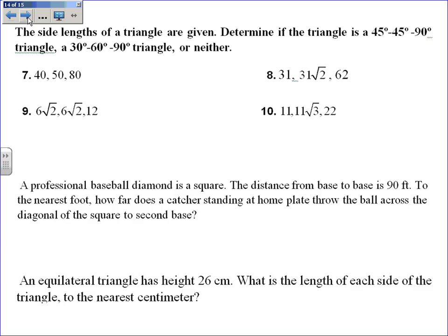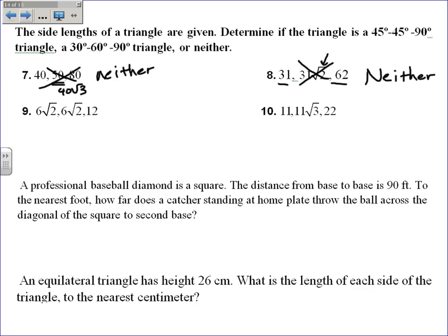One last type of question: side lengths of a triangle are given — determine if it's a 45-45-90 triangle, a 30-60-90 triangle, or neither. This one doesn't have any doubling or pairs, and it doesn't look like root 3 fits, so this must be neither. Number 8: although there's a double here like a 30-60-90, the 30-60-90 triangle has root 3, not root 2, so this must be neither as well. Number 6: these two sides are the same and there's a root 2 pattern, so this must be a 45-45-90 triangle.